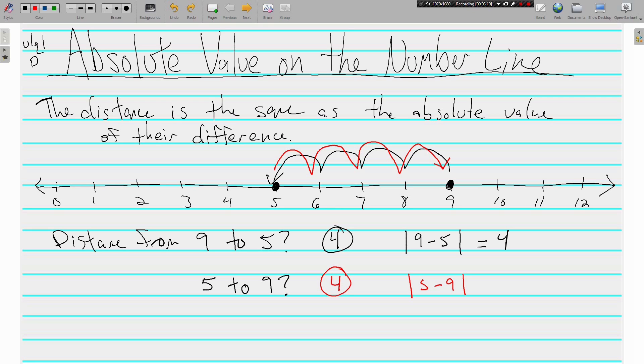Although 5 minus 9 is going to be negative 4, the absolute value of a negative 4 is positive 4. So whether we're going from 9 to 5 or from 5 to 9, the absolute value of that difference is going to be 4, and that's the distance of those two numbers.